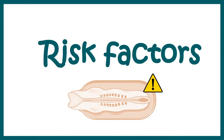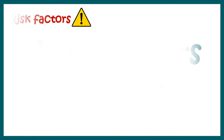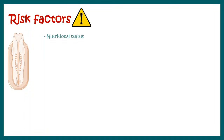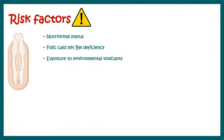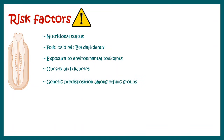Let's talk about the risk factors which can lead to neural tube defects. Risk factors include nutritional status — especially folic acid deficiency and vitamin B12 deficiency can lead to neural tube defects. Exposure to environmental toxicants, stressors, and clinical situations like obesity and diabetes could accelerate the process of neural tube defects in pregnant women. Genetic predisposition is another important factor which might be causal for neural tube defects.